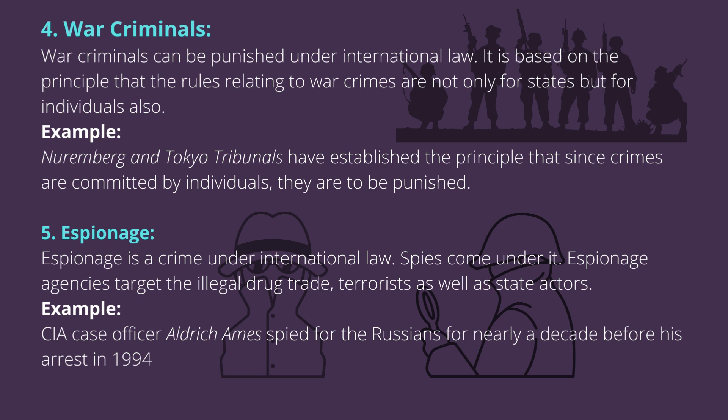Fifth, espionage: espionage is a crime under international law. Spies come under it. Espionage agencies target the illegal drug trade, terrorists, as well as state actors. For example, CIA case officer Aldrich Ames spied for the Russians for nearly a decade before his arrest in 1994.